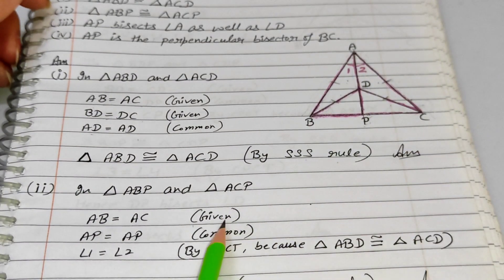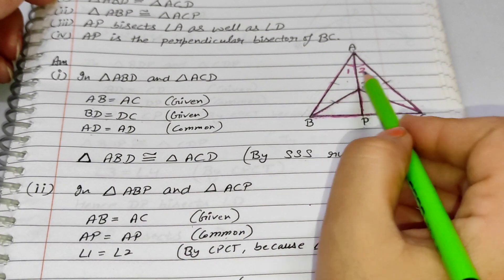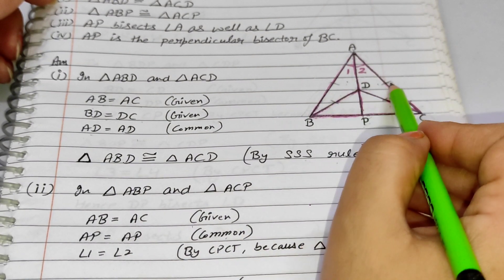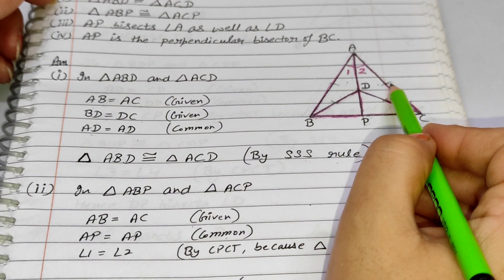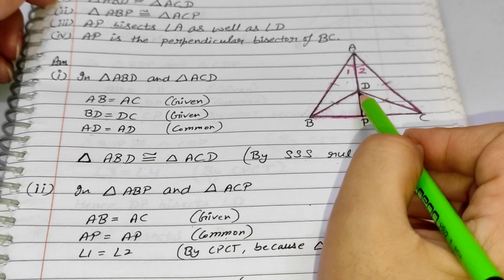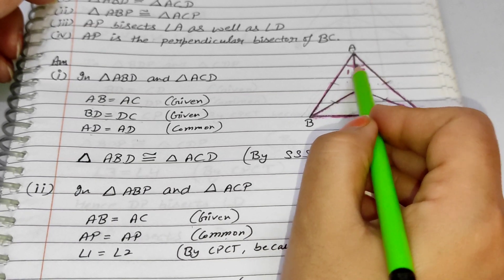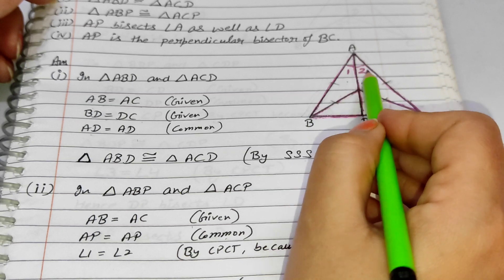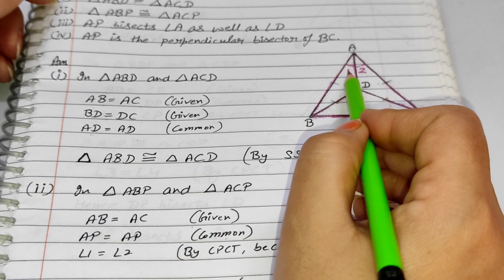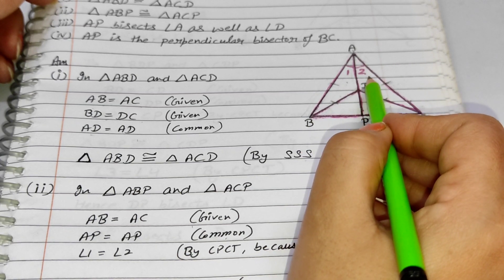Since both triangles are congruent, their corresponding sides and angles are equal. So angle 1 equals angle 2 by CPCT. AP is common, and with one side equal — by SAS (Side-Angle-Side) rule, triangle ABP is congruent to triangle ACP. This completes the second part.